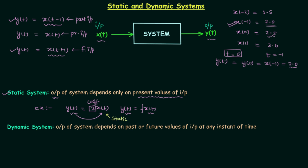You can also verify in exams by substituting t = 0, 1, 2, or any value. For example, making t = 0 gives y(0) = 2·x(0) — present input, present output. However, be careful: sometimes substituting t = 0 may suggest a static system, but checking other values reveals it is not static. In that scenario, the system would actually be a dynamic system.